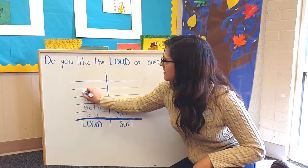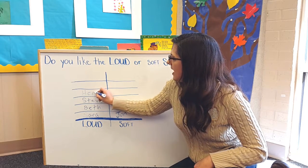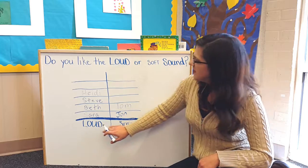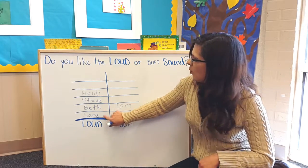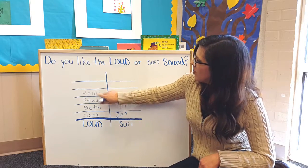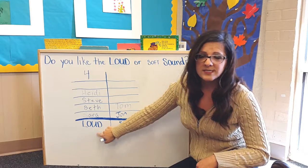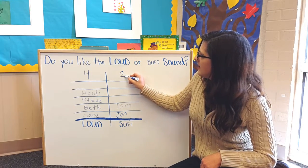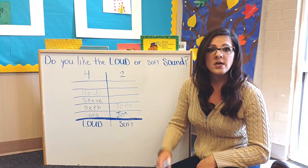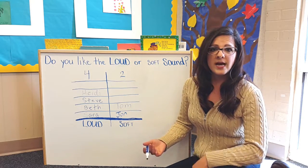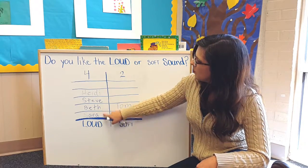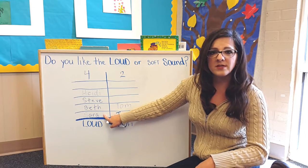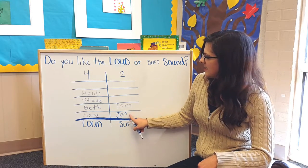Once I have everybody's name filled in, we will take a minute and ask which column has the most — the loud column or the soft column. And we would count. First, let's count loud: one, two, three, four. Four people like the loud sound. And then we will count the soft: one, two. Two people like the soft sound. That's when you can use the words which one has the most and which one has the least. The children can notice the loud column has more, so the most is from the loud column, and then the children will say the least is from soft.